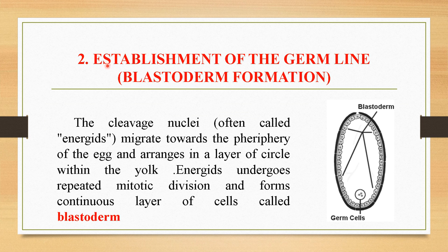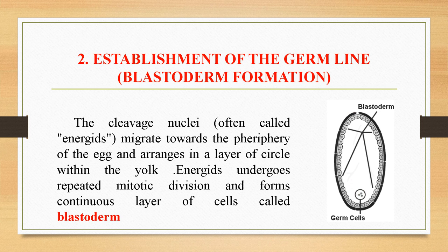The second step is establishment of the germline or blastoderm formation. The cleavage nuclei, also called energids, migrate towards the periphery of the egg. Here you can see that the cleavage cells migrate to the periphery and arrange in a layer of cells within the yolk. These energids undergo repeated mitotic division and form a continuous layer of cells called the blastoderm, which you can see in this typical egg.